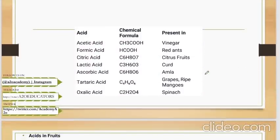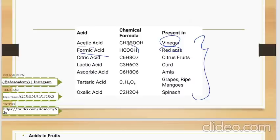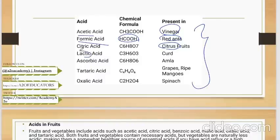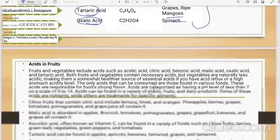Common acids which are found in our everyday food products are here as follows. Acetic acid is nothing but vinegar. Formic acid is found in red ants. The red ant bites which leave a red rash on your body is formic acid, HCOOH, the simplest acid. Citric acid is found in citrus fruits - citrus fruits are lemon, oranges, maltas. Then you have lactic acid. Lactic word is related to milk. So this acid is present in curd. Then you have ascorbic acid, present in amla. Tartaric acid is present in grapes and ripe mangoes. Oxalic acid is present in spinach.